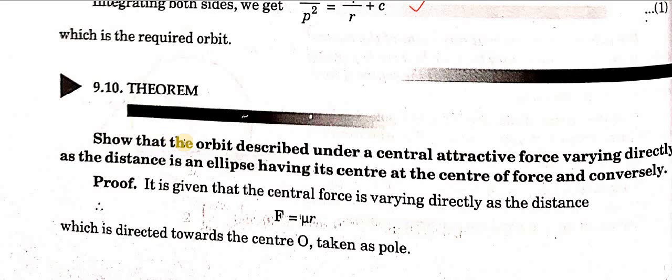The next theorem: show that the orbit described under a central attractive force varying directly as the distance is an ellipse having its center at the center of force. We have to prove that if the force varies directly as the distance, and the law of force is given, then the orbit is an ellipse. The force is directly proportional to the distance.